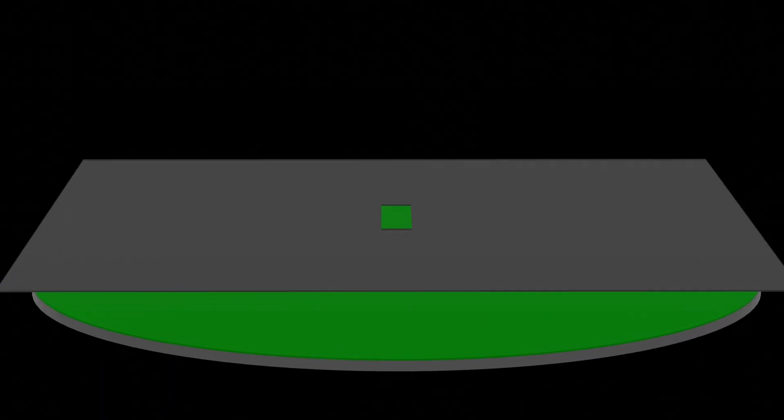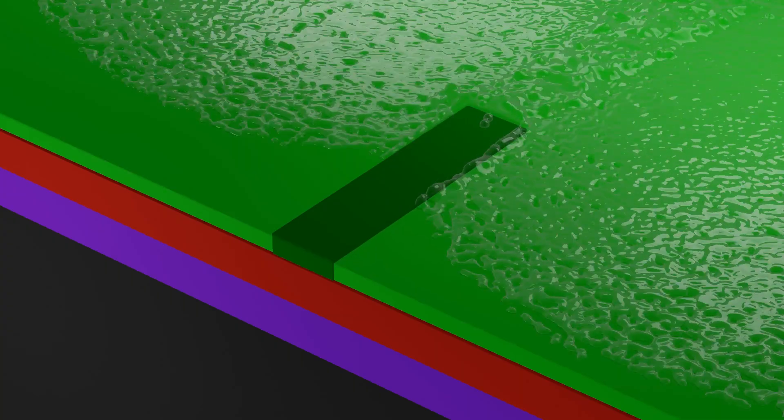After the photoresist is exposed to light, it changes the structure and then we can develop it so we can remove the exposed regions. Once we have the patterns, the photoresist acts as a mask and we can do the etching then. So to etch our deep trenches, for example.